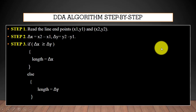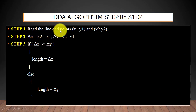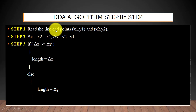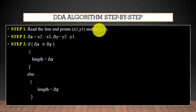Here we have the steps for the DDA algorithm. In the first step we will read the line end points. As you know, we can generate a line by using two points — we need two end points to generate a straight line. So first of all we will read the line end points. Here we have two end points: X1, Y1 and X2, Y2.